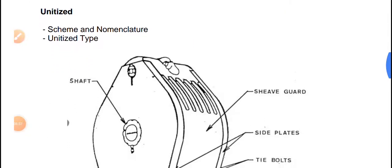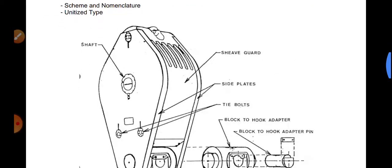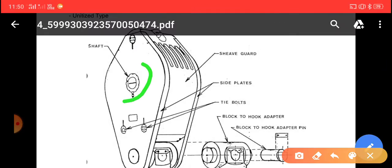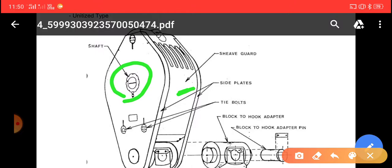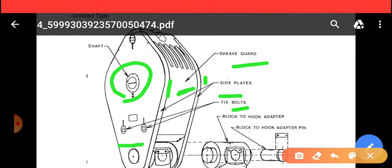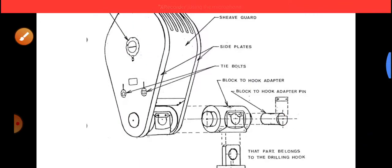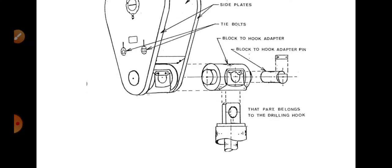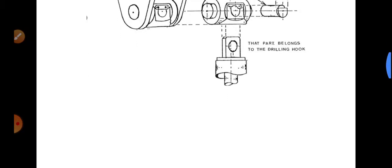In the detailed view, you can see the shaft location and the sheave guard, which supports the sheaves that are in-bolted inside the traveling block. There are also side plates and two tie bolts. A block-to-hook adapter pin connects the block to the drilling hook at the bottom.